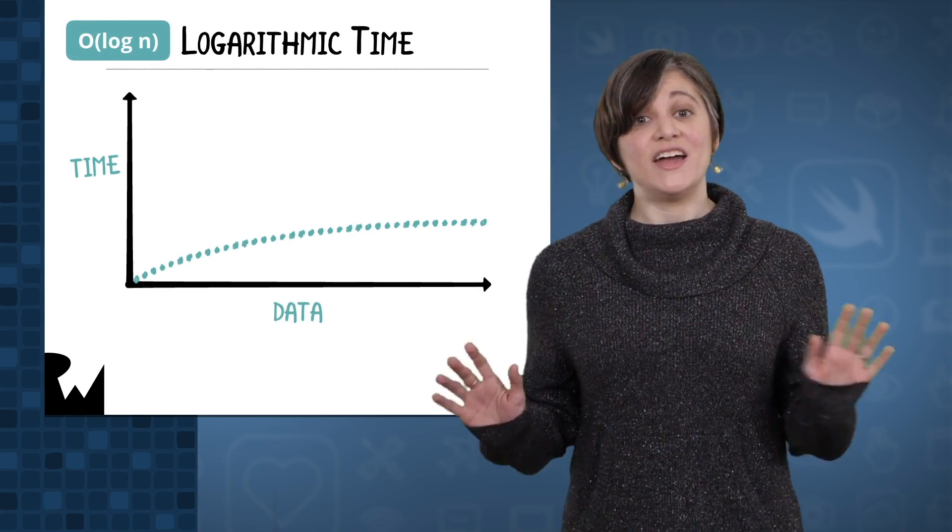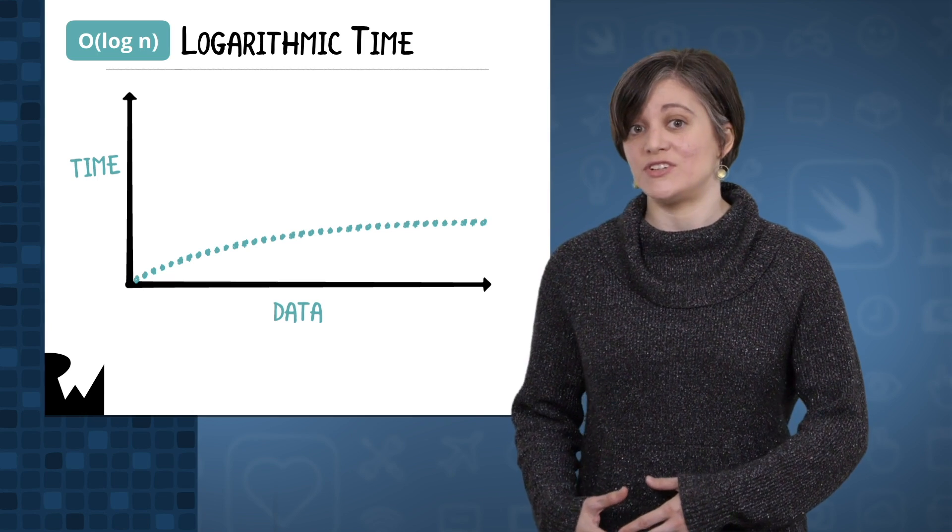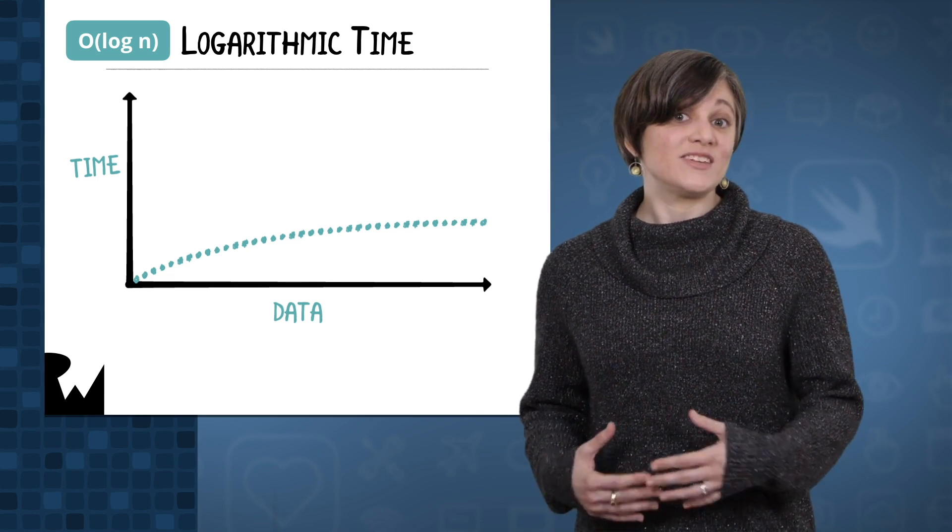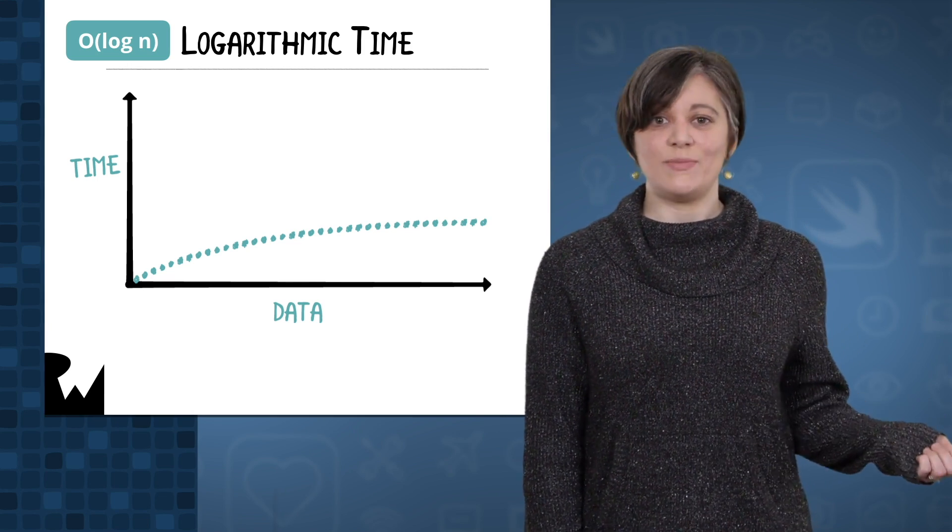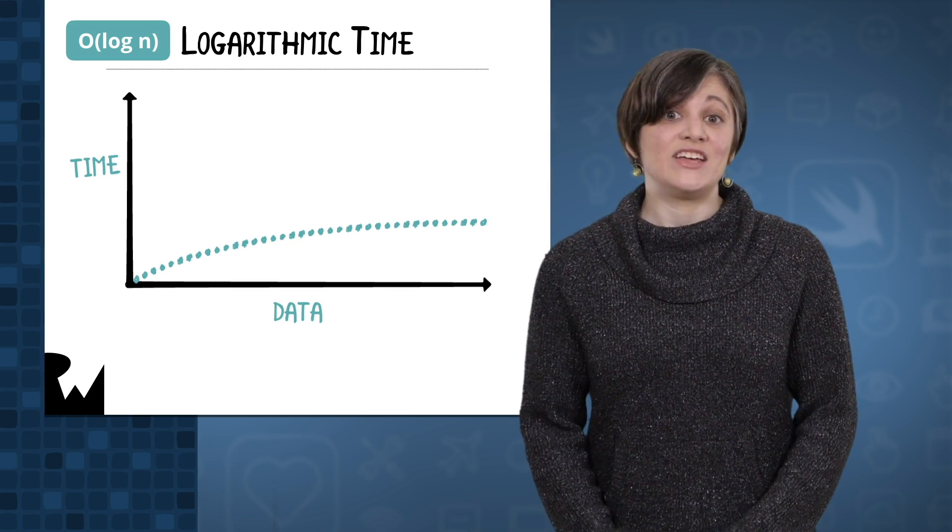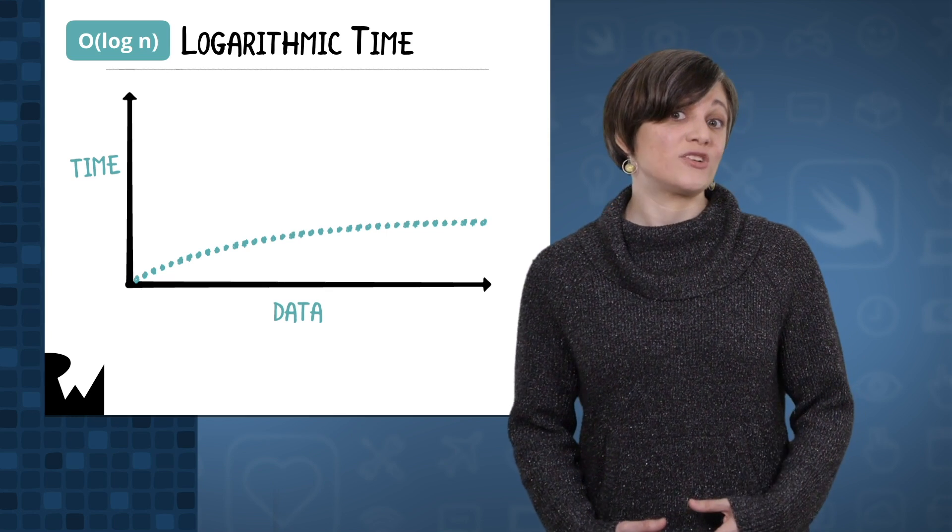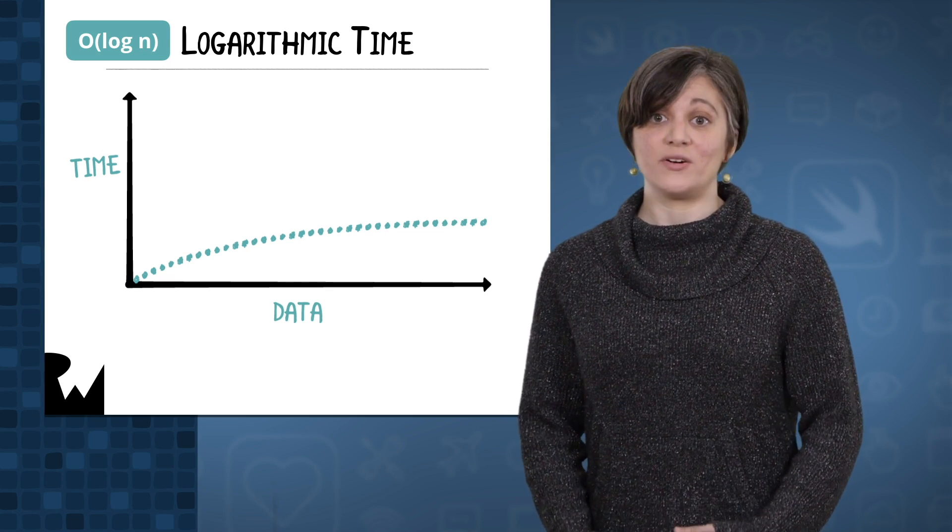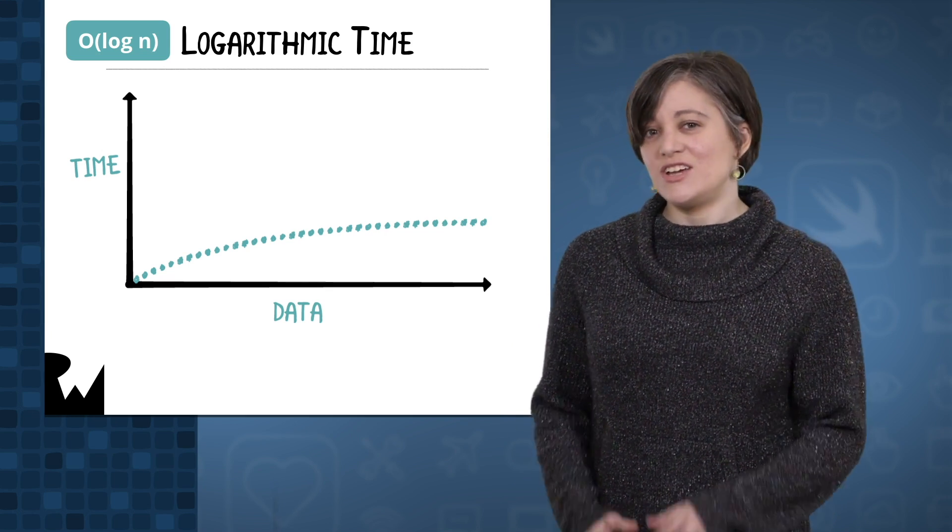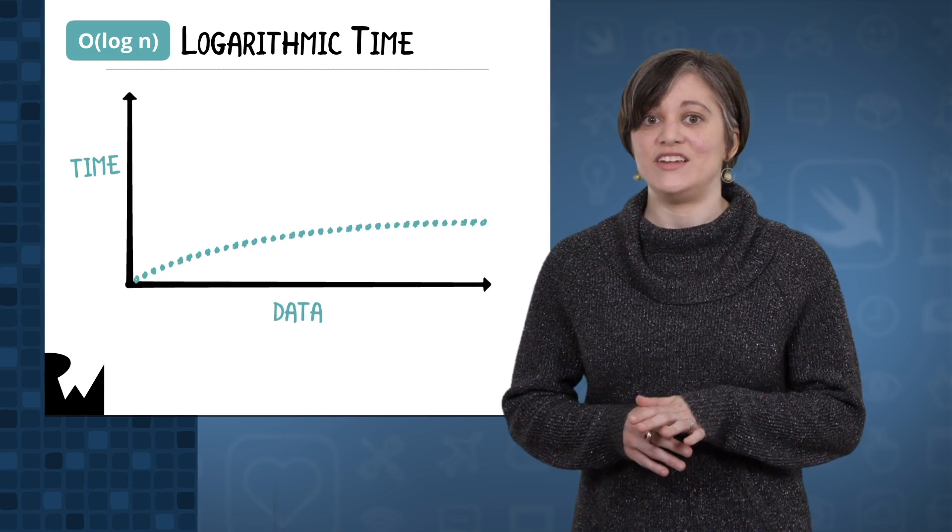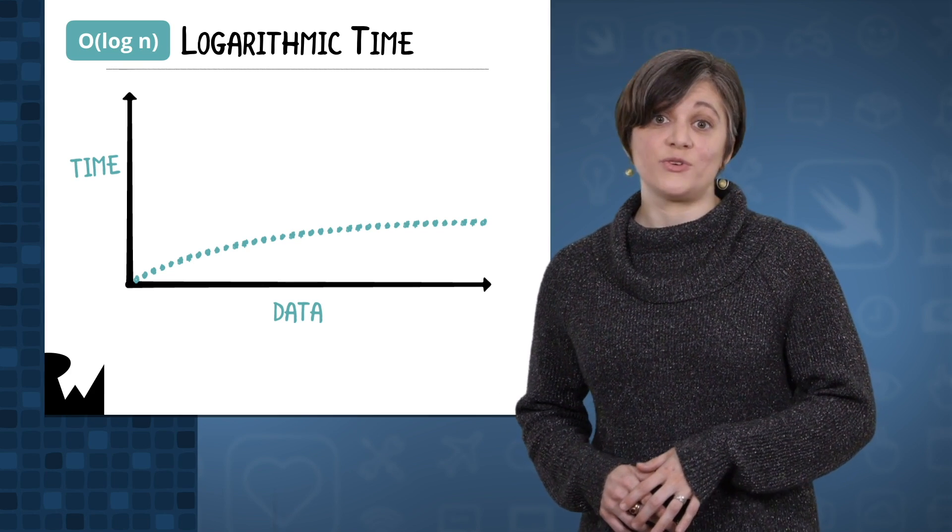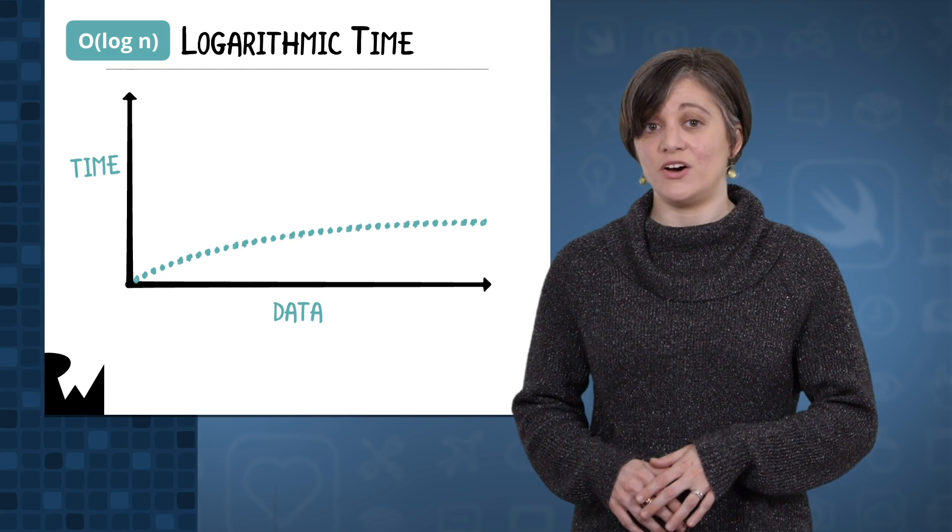In the previous examples, every item in an array was inspected by the functions, but sometimes only a subset of the input needs to be inspected. Cases like that can give you logarithmic time. Binary search, which we'll cover in part 2, is an algorithm with logarithmic complexity. It works by essentially cutting the input to search in half in each iteration. The Big O notation for logarithmic time complexity is big O of log n.